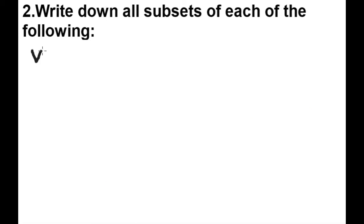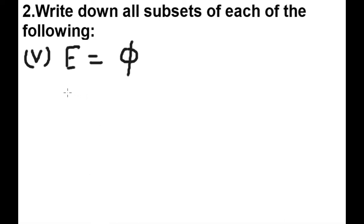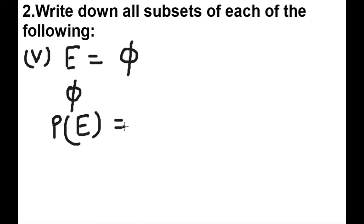The fifth set E is the null set. Since there are no elements, the only possible subset is the null set itself. So all possible subsets of E is: {null set}. This is the only possible subset.